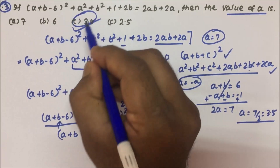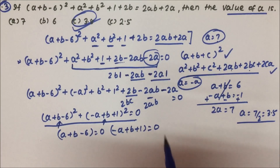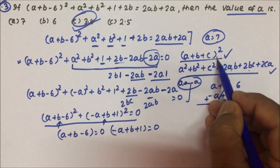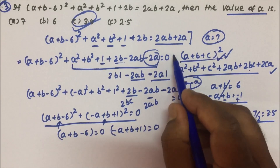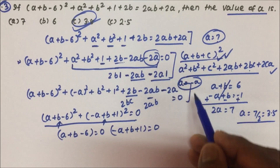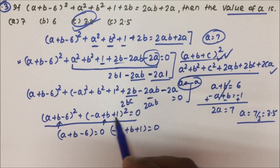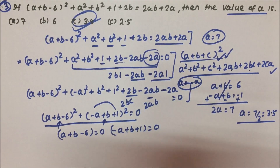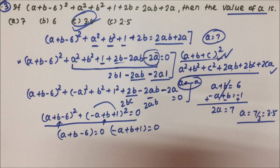This particular problem was one of the best problems because we had to convert it into the form of (a + b + c)² — and it was very important to identify which term was negative. Basically, 'a' was negative here, and that's how we were able to solve the problem. Thanks a lot for watching the video. I hope you understood all three important questions asked in the SSC examination.